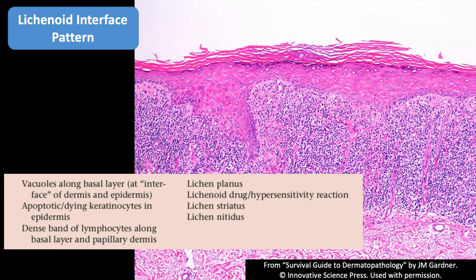Sometimes lupus presents with denser inflammation and actually looks lichenoid. Sometimes a drug eruption can look lichenoid — and that's worth bringing up. Drug eruptions are a problematic situation because they're very difficult to prove by biopsy and also very difficult to disprove. That was a quote from one of my mentors, Ron Rapini, and it's true — there are so many different patterns of inflammatory disease in the skin that can be caused by a drug.